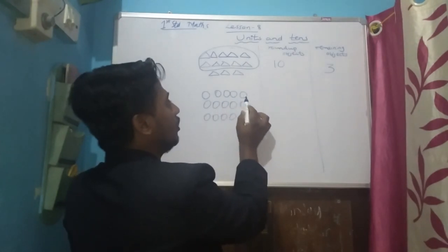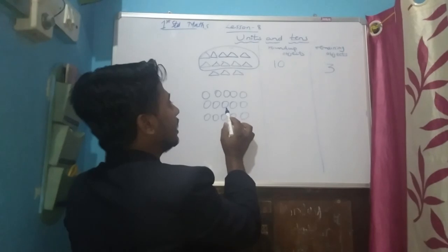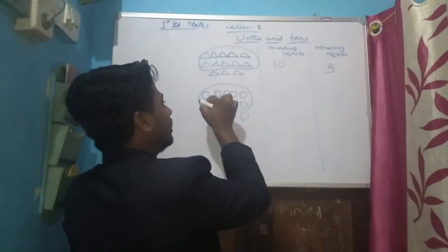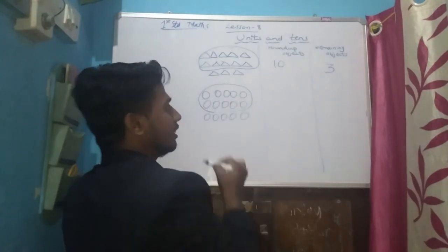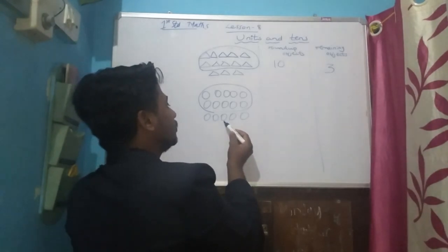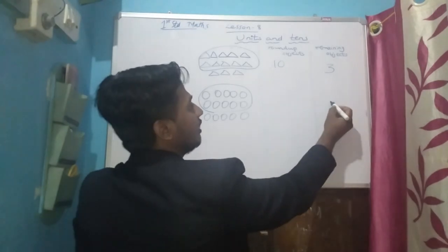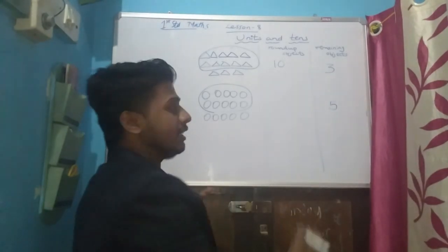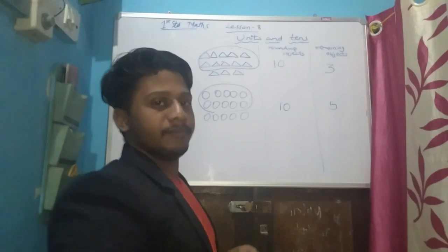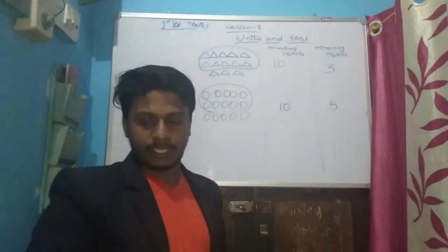One, two, three, four, five, six, seven, eight, nine, ten — we are going to circle it. Remaining is one, two, three, four, five — five objects are remaining. Ten objects we rounded up.